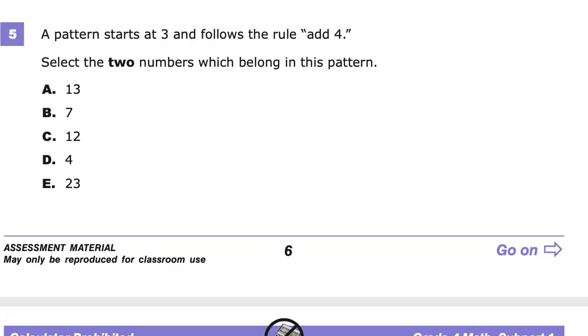A big thing I'm already noticing here is we need to select two numbers. We want to pay attention to those bold words, so we need two answers when we go over here to select our answer choices. We also see our pattern starts at three, so that's where we're going to begin.